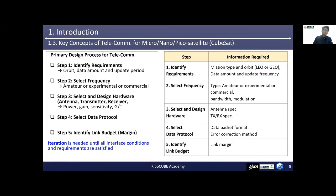This view graph summarizes the primary design process for telecommunication subsystems. Step 1 is to identify requirements. Orbit type, data amount, and update period should be organized and coordinated with satellite system engineers and launch interface providers. Step 2 is to select frequency. Here, a CubeSat project must make the first big decision about frequency: amateur, experimental, or commercial. If the same frequency can be used continuously in a series of missions, the workload in this step will be relatively easy. The CubeSat project may experience the largest workload around the frequency allocation process for the first mission.